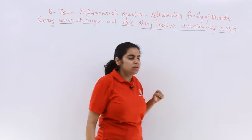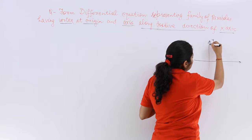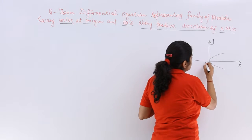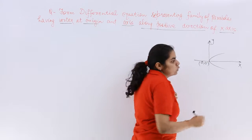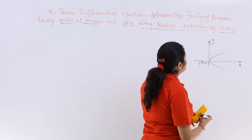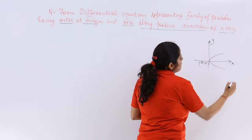So first let's draw the figure for it. We are asked about a family of parabolas wherein the vertex is at origin. So this should be your (0,0) and the axis is along the positive direction of the x-axis.